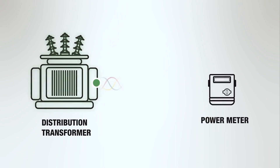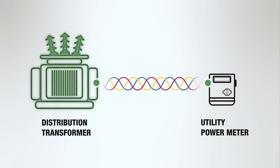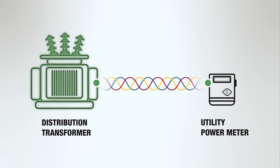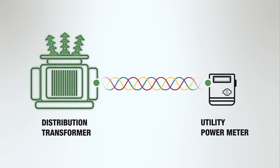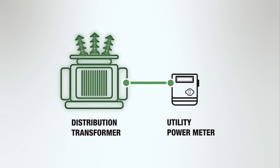The electrical three-phase voltage coming into a facility will be stepped down from the utility feed by a distribution transformer. At the entrance, a utility power meter measures the incoming electricity. The customer owns and maintains all equipment downstream from the meter.